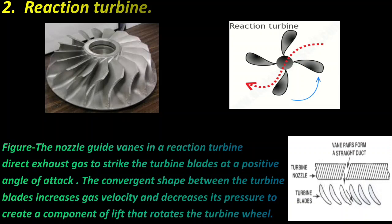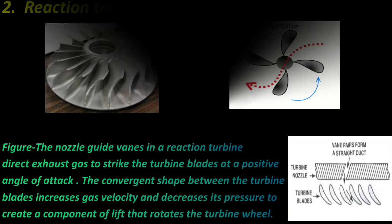You can see here in this picture, the nozzle guide vane in the reaction turbine directs exhaust gas to strike the turbine blade at a positive angle of attack. The convergent shape between the turbine blades increases gas velocity and decreases its pressure to create a component of lift that rotates the turbine wheel.